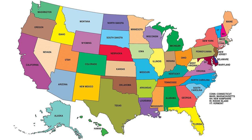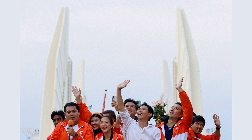Global powers: Global powers, including the United States and Russia, also became involved in the conflict. The United States provided support to the opposition, including training and weapons, while Russia provided military support to the government, including airstrikes and troops on the ground.